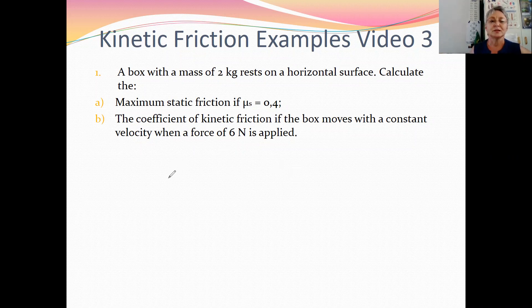So the example says a box with a mass of two kgs rests on a horizontal surface. Calculate the maximum static friction if mu s is 0.4, so the coefficient of static friction is 0.4.